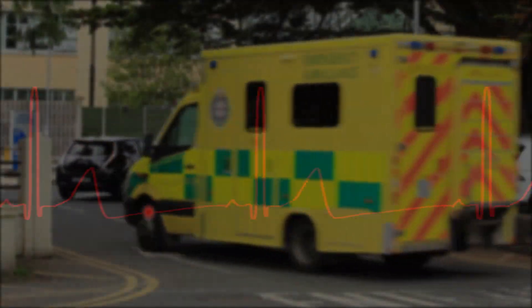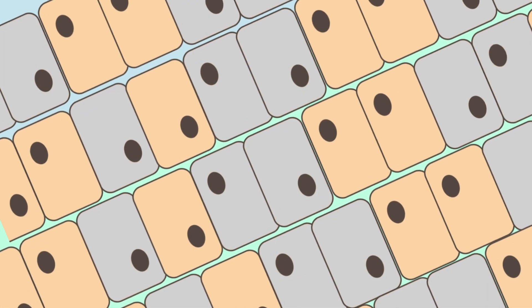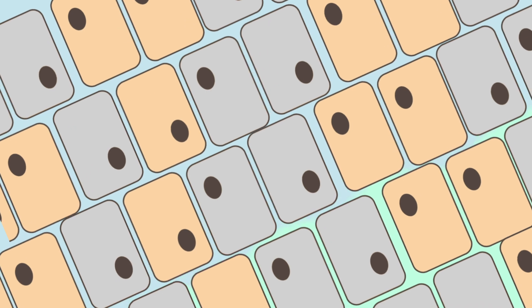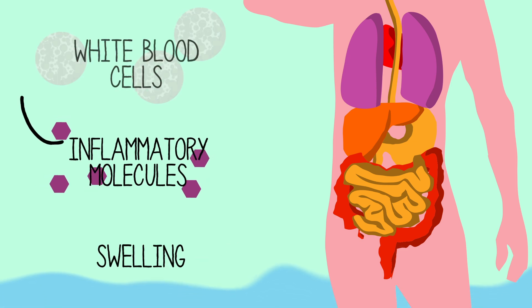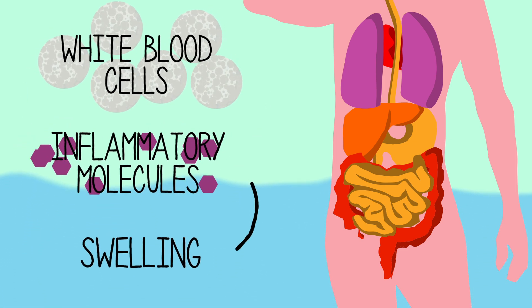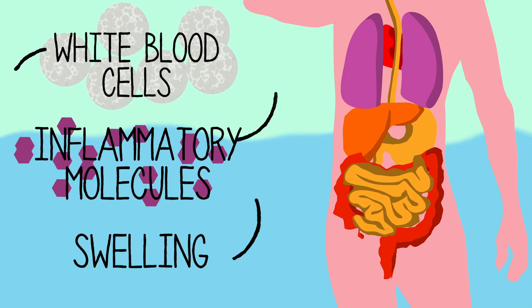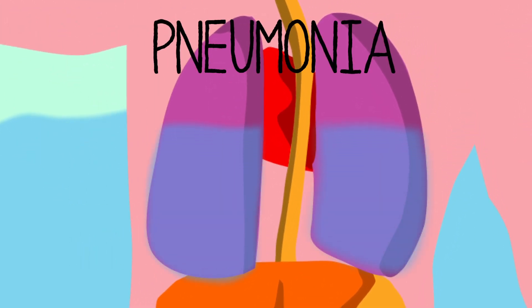But occasionally things can go wrong, like in the severe cases of coronavirus. As with other viral infections, the release of fluid and swelling helps to fight the spread inside the body, but too much can be a problem. The chemicals that cause the swelling can activate more white blood cells, which release more chemicals, which cause more swelling, and so on in a chain reaction. The result is a huge amount of fluid in the lungs, causing pneumonia, which makes it hard to breathe.